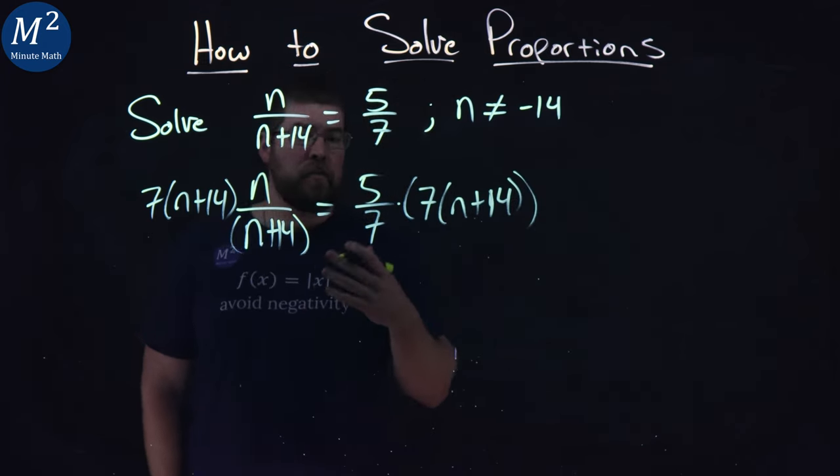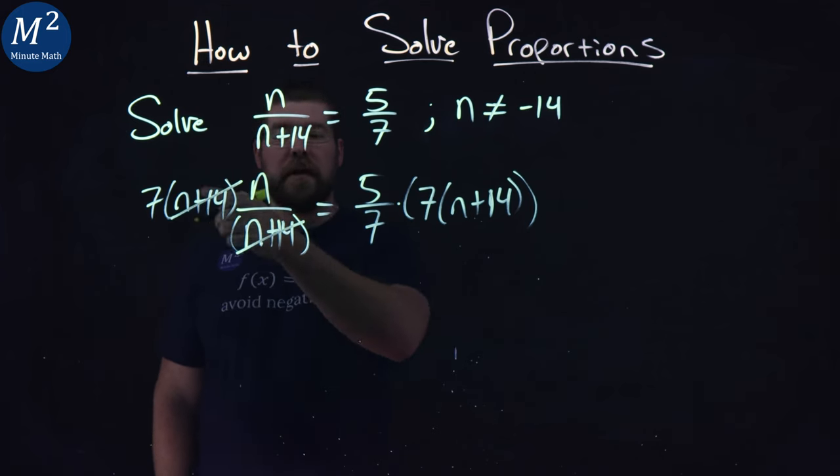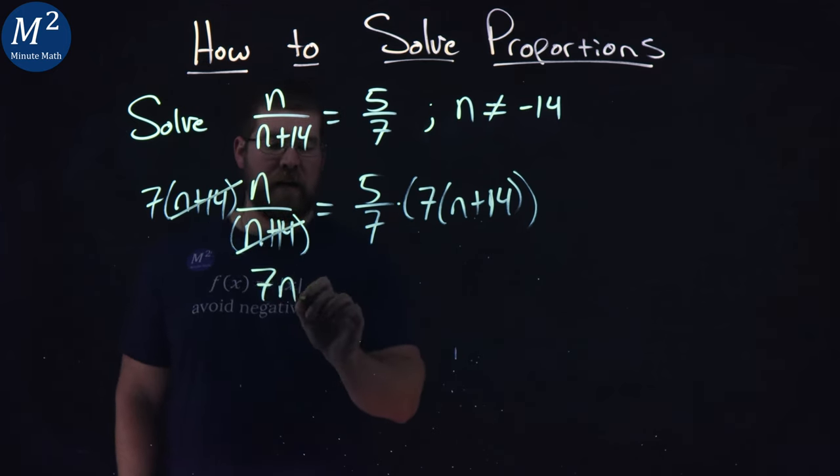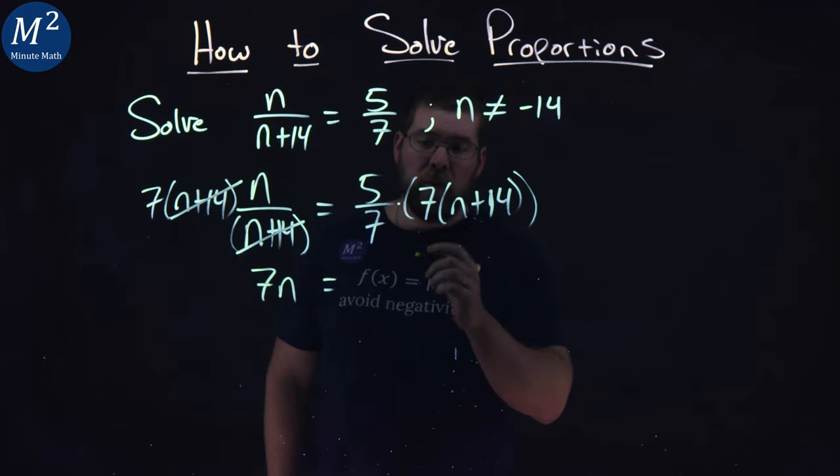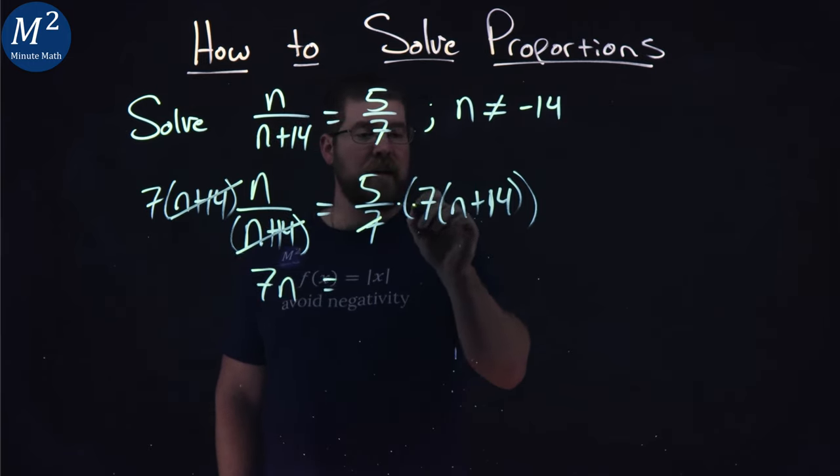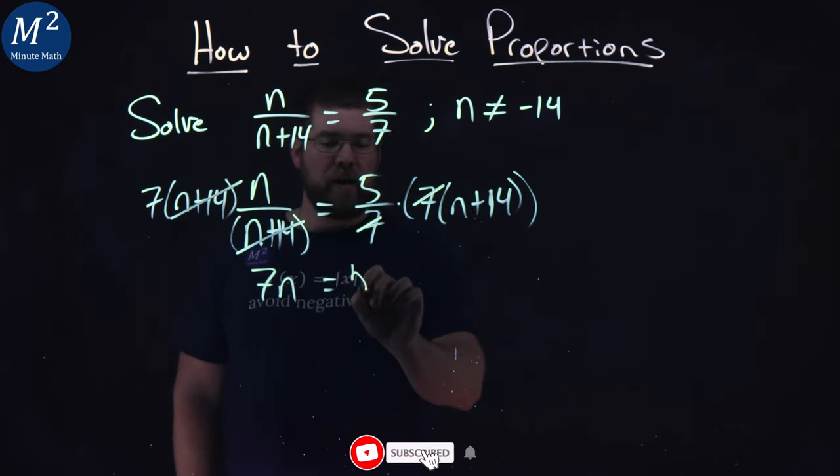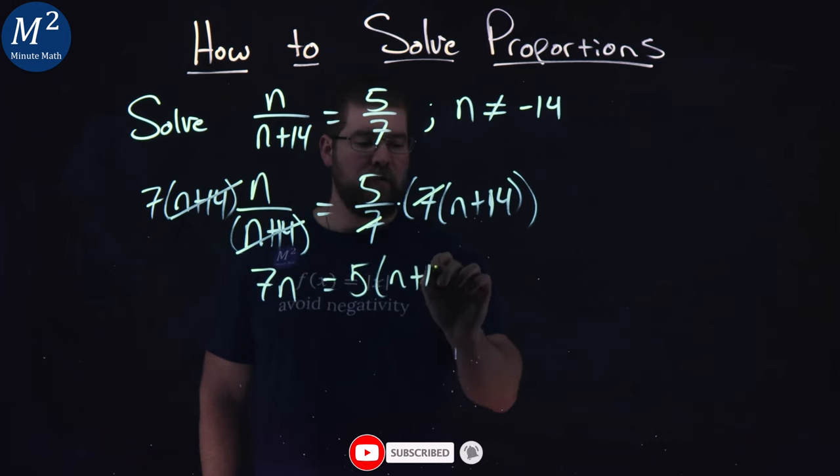Now from here, let's cancel where we can. n plus 14, n plus 14 cancels. We have 7n up here. On the right-hand side, the 7s cancel, and we're left with 5 times n plus 14.